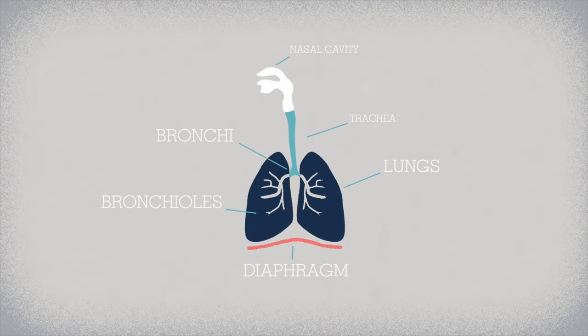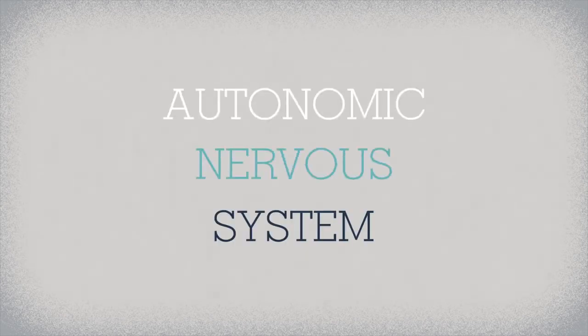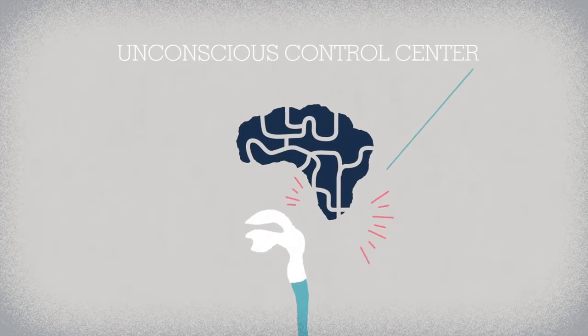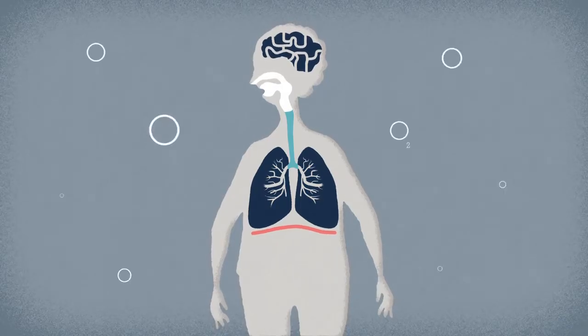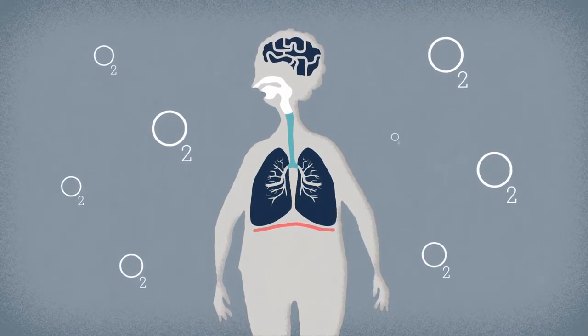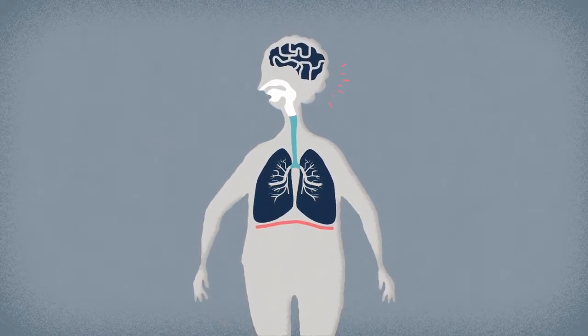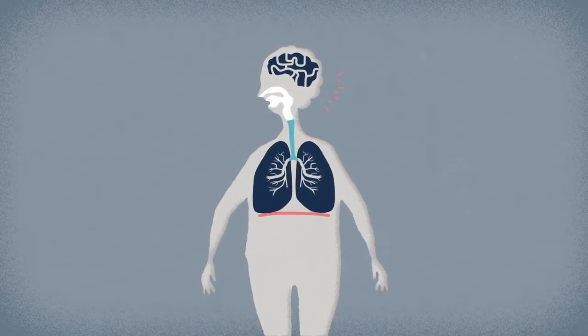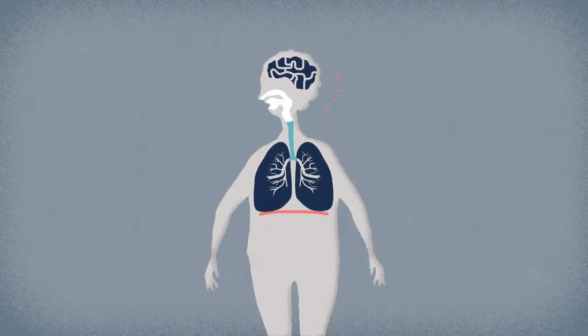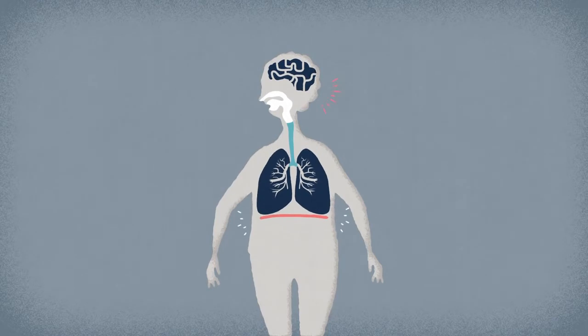And to get this machine moving, we need the autonomic nervous system, our brain's unconscious control center for vital functions. As the body prepares to take in oxygen-rich air, this system sends a signal to the muscles around your lungs, flattening the diaphragm and contracting the intercostal muscles between your ribs to create more space for the lungs to expand.